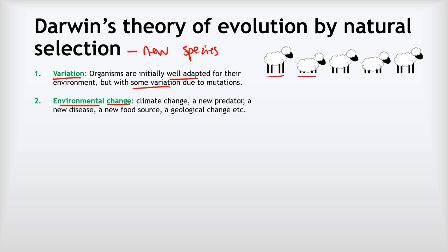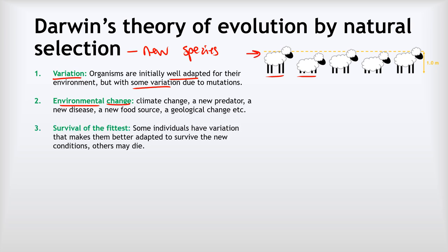We get survival of the fittest. Some individuals have variation that makes them better adapted to survive the new conditions, and others may die. In my sheep example, any individuals taller than one meter are left alone by the scary new predator and survive. Unfortunately, the shorties—the ones below a meter—get eaten by the predator and are removed from the game of life.